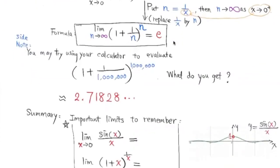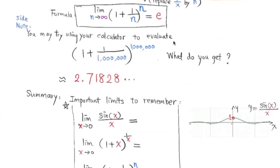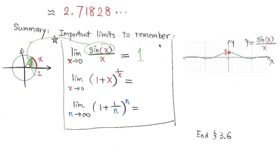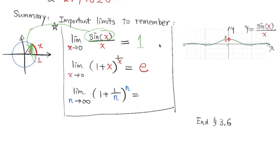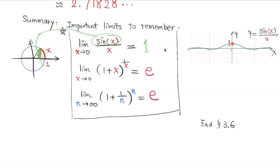Now let's summarize some important limits that we have learned so far. The limit of sin of x over x as x approaches 0 is equal to 1. The limit of 1 plus x to the 1 over x power as x approaches 0 is equal to e. And the limit of 1 plus 1 over n to the n power as n goes to infinity is equal to e. That's the end of our lesson, and thank you for learning with me today.